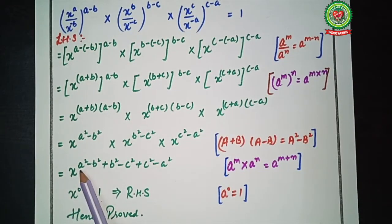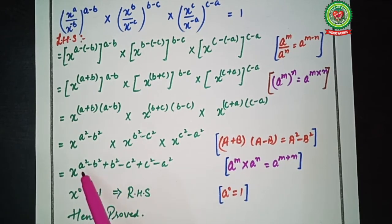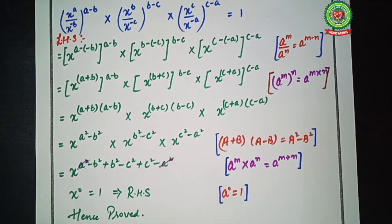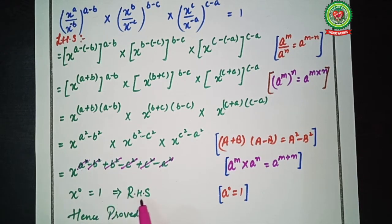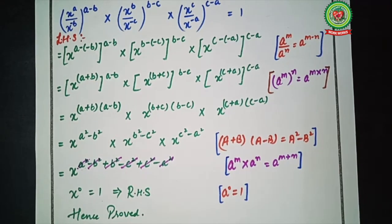Since x is the base and they are being multiplied, we add the powers: x raised to power a squared minus b squared plus b squared minus c squared plus c squared minus a squared. Now a squared positive and a squared negative cancel, minus b squared and plus b squared cancel, minus c squared and plus c squared cancel. We are left with zero, so x raised to power 0 equals 1, and 1 equals the right-hand side. Hence proved. These examples were very easy and I hope all of you understood completely. You are now able to do the related homework sent in your Snap Homework. Thank you.